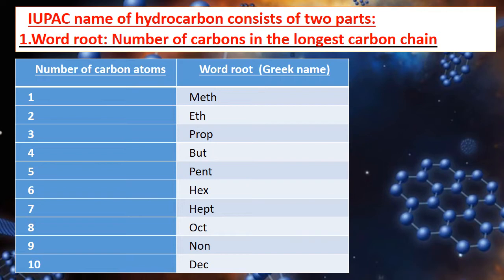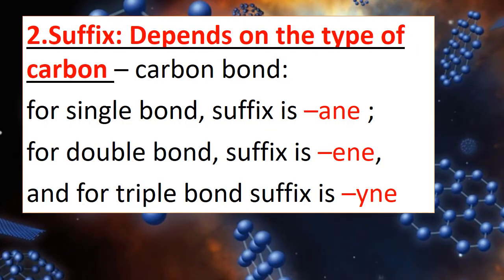The remaining part of the hydrocarbon name is decided by the number of hydrogen atoms present — this is called the suffix. The prefix is decided by the number of carbons and the suffix by the type of bonding. If the hydrocarbon has a single bond the suffix is -ane, if a double bond it is -ene, and if a triple bond it is -yne.